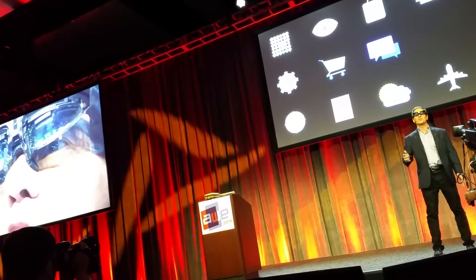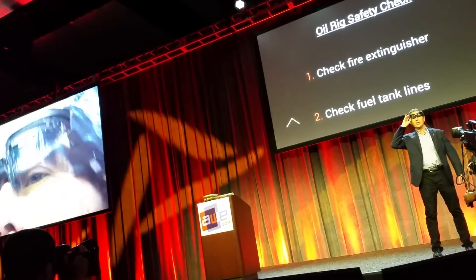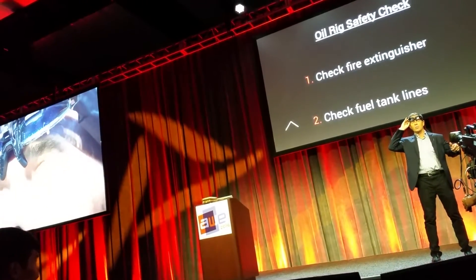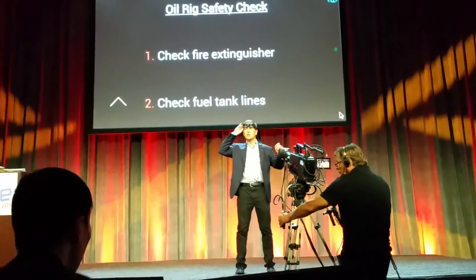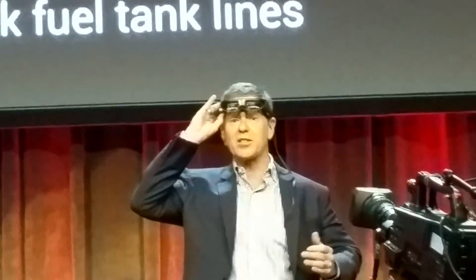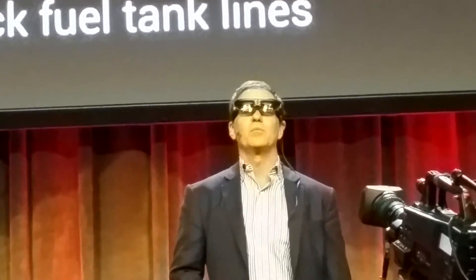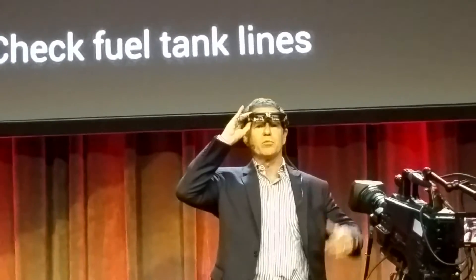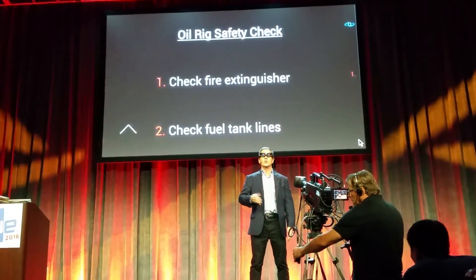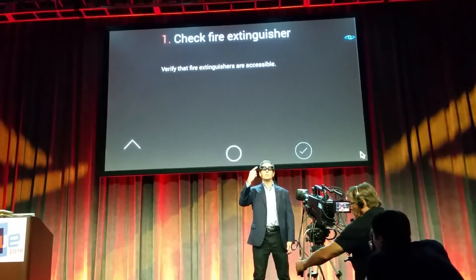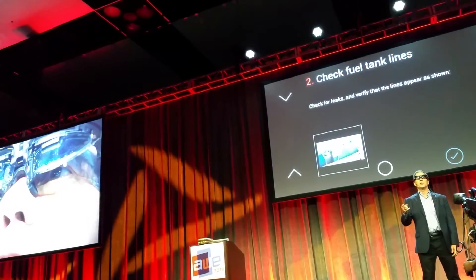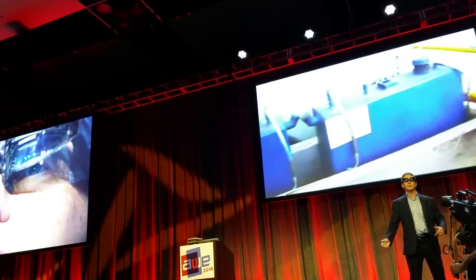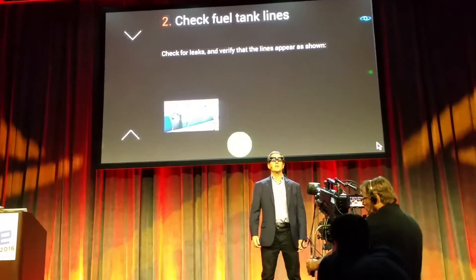Let me go home again. Another example which is fun — now I've got a checklist launched. We talked to some C-level execs at an energy company, and the way that procedural adherence works today on an oil rig is that individuals use a clipboard, a magic marker, and a piece of paper. We showed them you could be wearing a pair of glasses — and notice, I didn't calibrate, I can take the glasses on or off, I can move them around, it just keeps working. I'm going to check fire extinguisher. I find out I'm supposed to verify that they're accessible. I'll mark it done. Now it says check fuel tank lines, check for leaks. There's a picture here — let me zoom into that, I can see it, now I know what I'm supposed to do. Let me go back and mark that one done and go on to the next one.